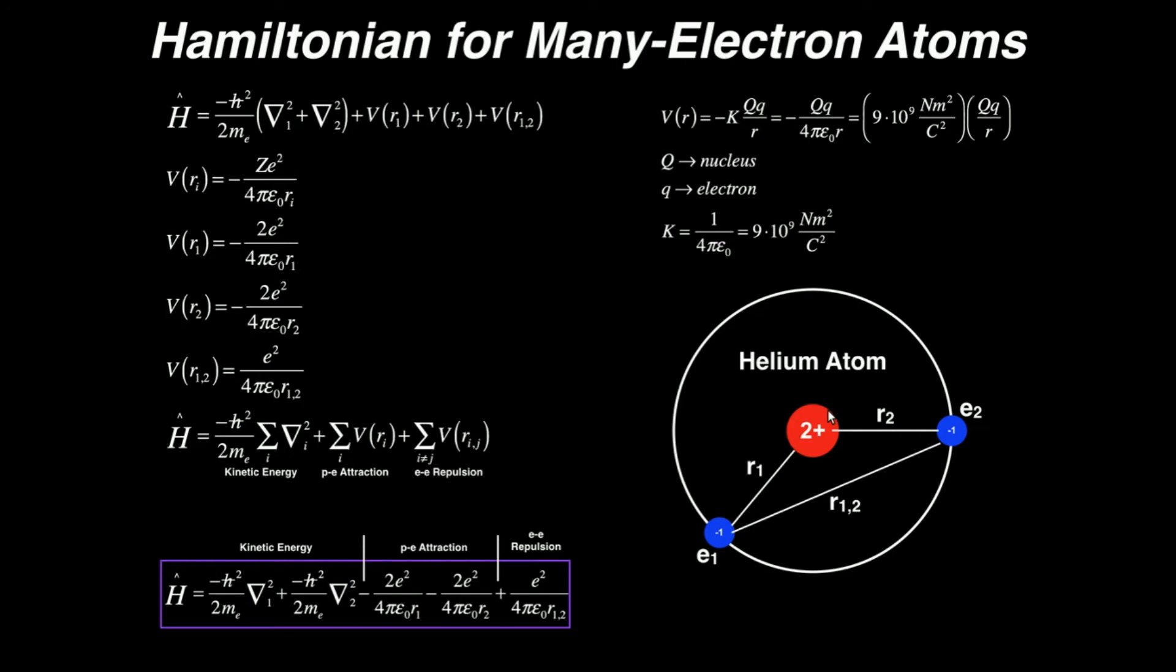My first potential energy term, which is our attraction term between E1 and the nucleus, is going to be given by negative two, which is the charge of the helium nucleus, times e squared, divided by four pi epsilon zero, divided by r1, which is the distance between the first electron and the nucleus. By a similar argument, the second potential energy term, which is also attractive, is going to be negative two e squared divided by four pi epsilon zero and then the distance between electron two and the nucleus is r2. So those are pretty straightforward.